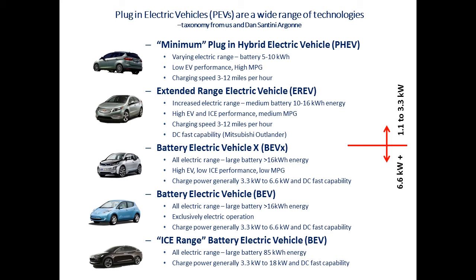The new vehicle category, BEVX, currently has only one vehicle — the i3 Rex. The question is whether it behaves like a full EV that needs public chargers like the LEAF and i3, or whether people will prefer to drive home on gas and skip the DC fast charger even though they can use it. And then with BEVs, range and charging speed have changed from 3.3 to 6.6 kW, so people can use DC fast chargers more than they used to.